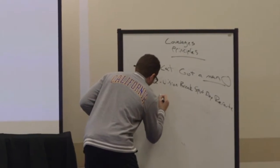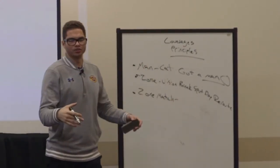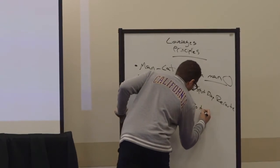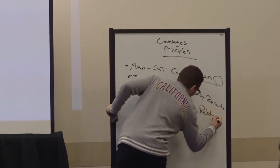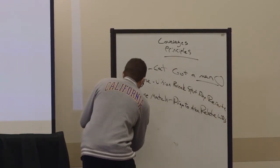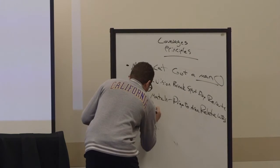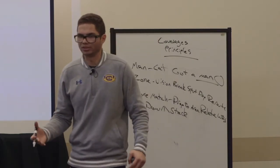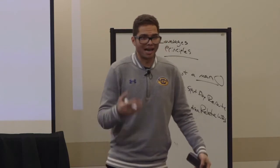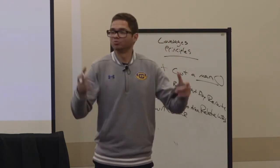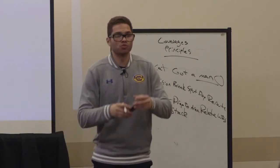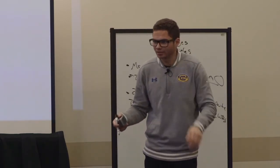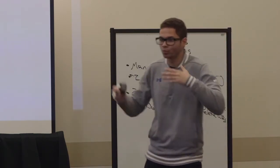Zone match. I'm going to drop to an area, and I'm going to relate to receivers in that area. I'm going to play top down — slash stack the zones. An example of this would be cover three match. I'm dropping to the hook. I'm dropping to the seam. I'm dropping to the curl. I'm relating to the receivers as they enter my zone.